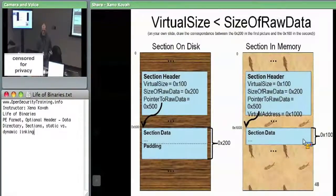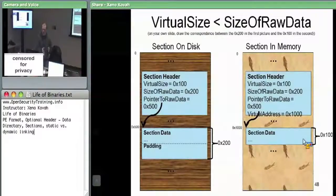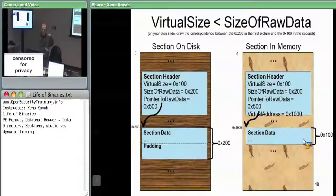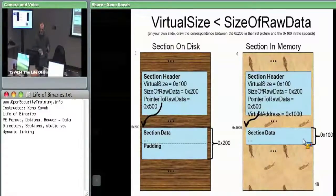That matters in reverse engineering: if you see data changing outside of the virtual size, someone is playing around with their headers. A legitimately compiled program will have a section header where virtual size reflects exactly how much the linker is going to access. If the virtual size is smaller than what's on disk, any access outside of that range is potentially code that understands what the OS loader is doing and is deliberately manipulating it.